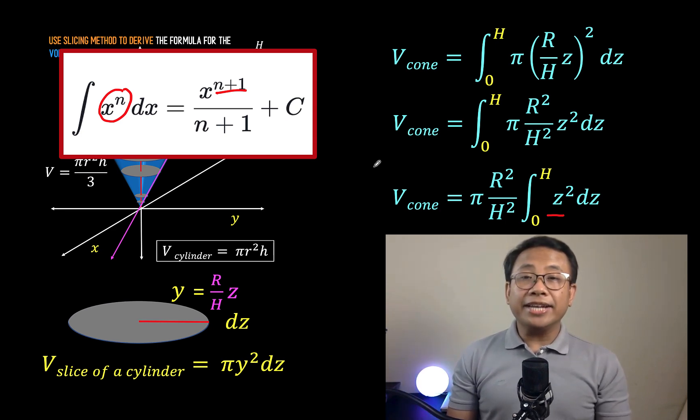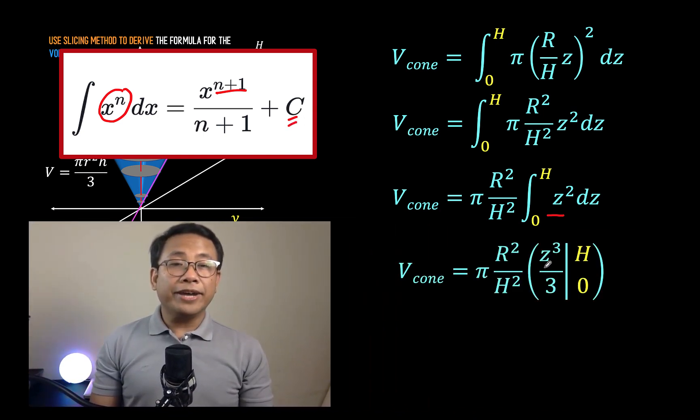Since we are doing definite integration here, we'll not be including this constant anymore. So we now have z raised to 2 plus 1, that is z cubed over 3, and we will evaluate that from 0 to h, and we just copy the constant outside the integration symbol.